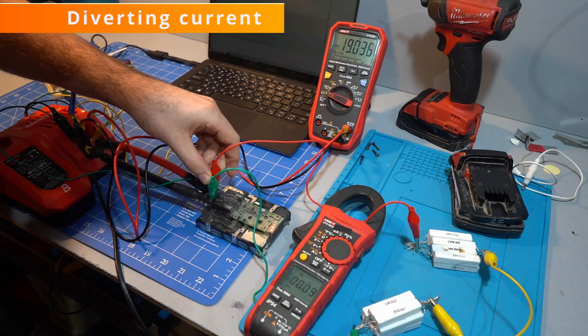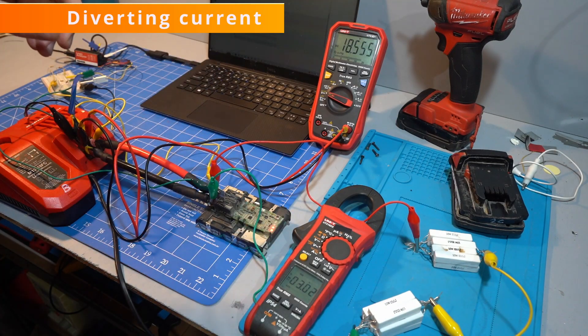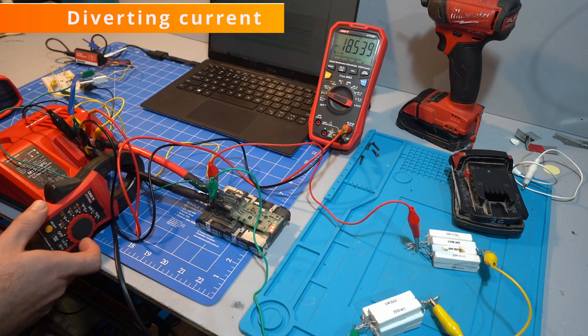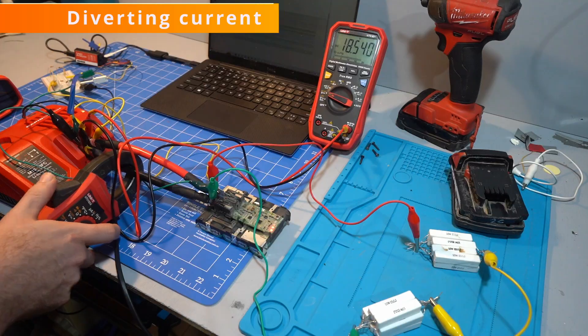I set up a 6 ohm power resistor in parallel to pull half of the charging current away from the battery. This did not change states or give any errors, so there's no current sense in the battery during charging.